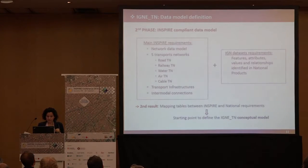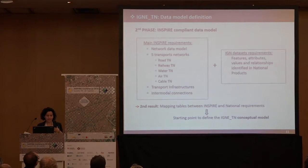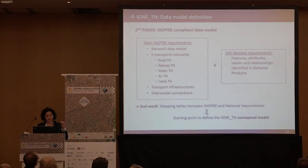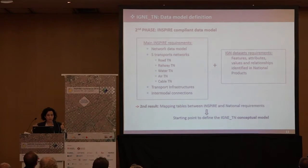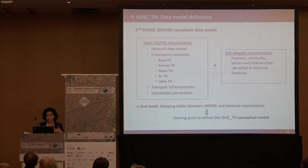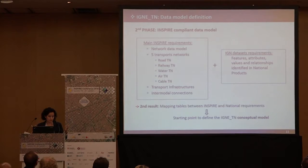The second phase was to study the INSPIRE data model. From that we identified the strongest INSPIRE requirements. First of all is that all transport information has to be a network data model. So far, we have information — the roads transport network — yes, it is modelled with a network data model, but not the rest of the information; the rest is cartography.